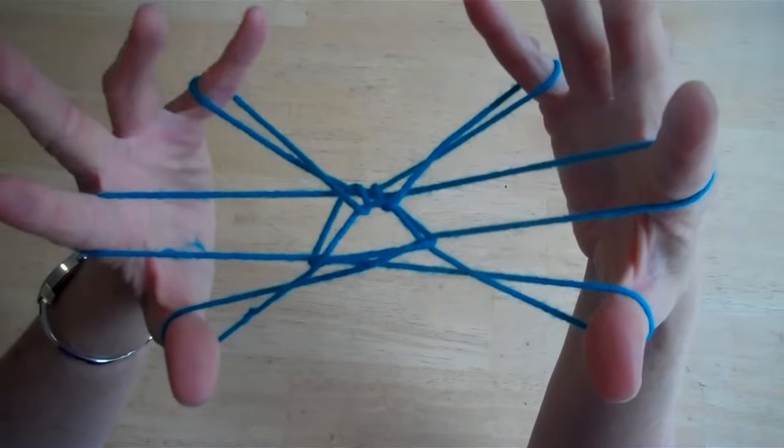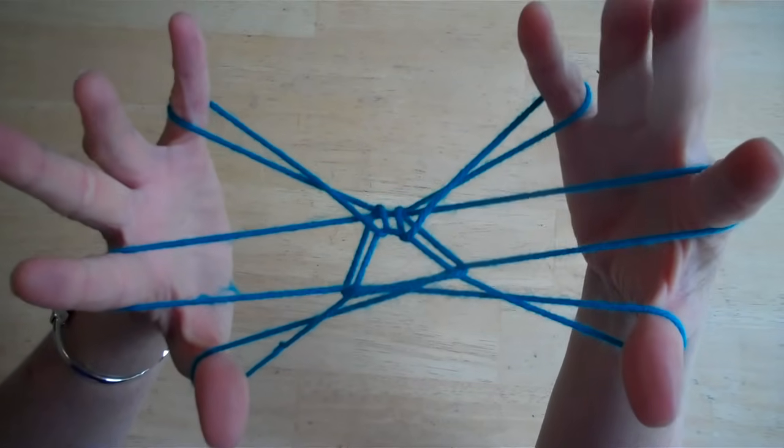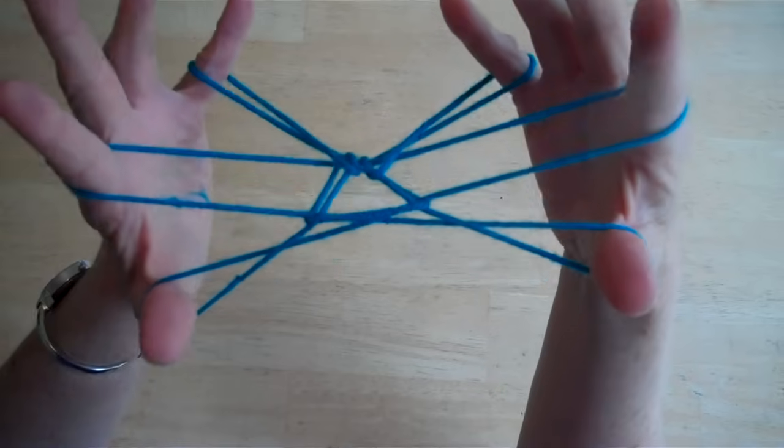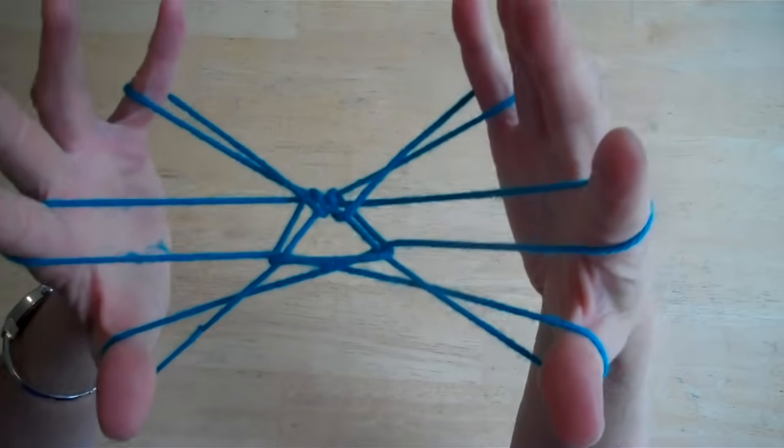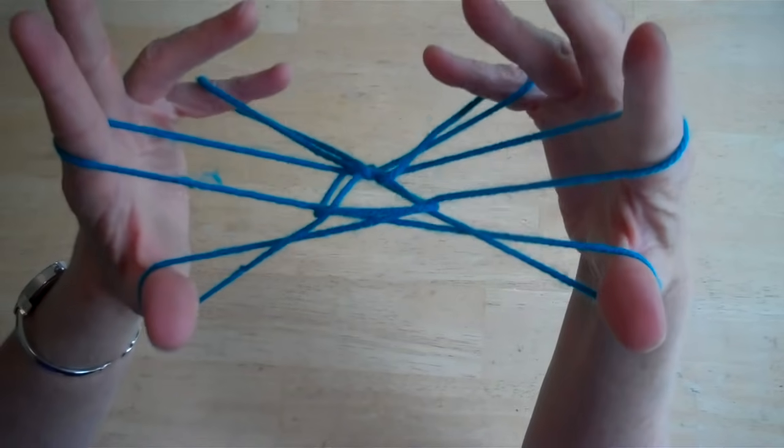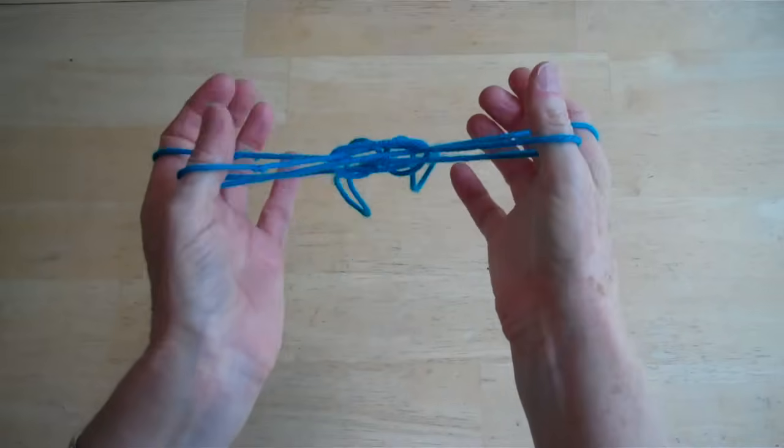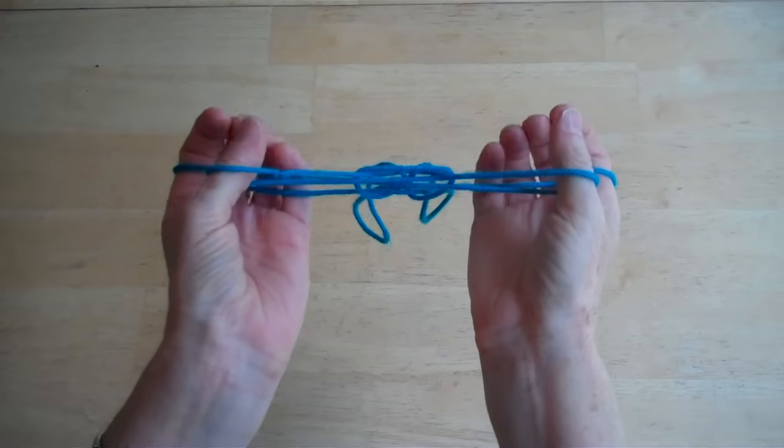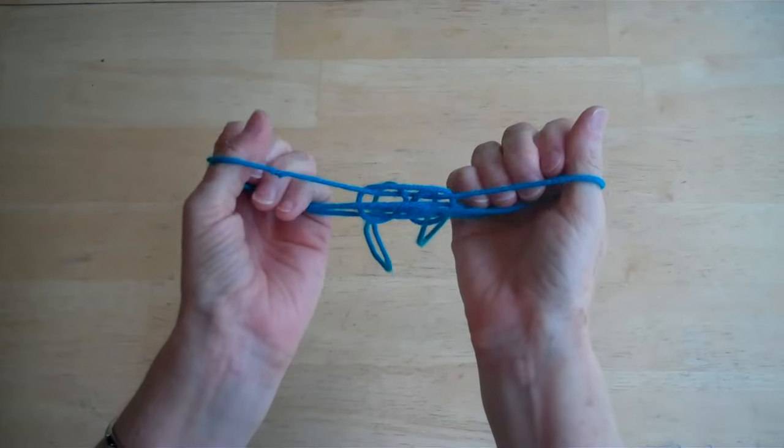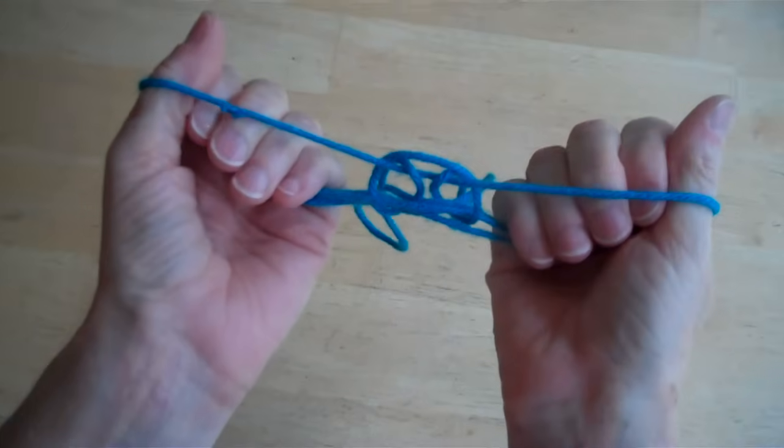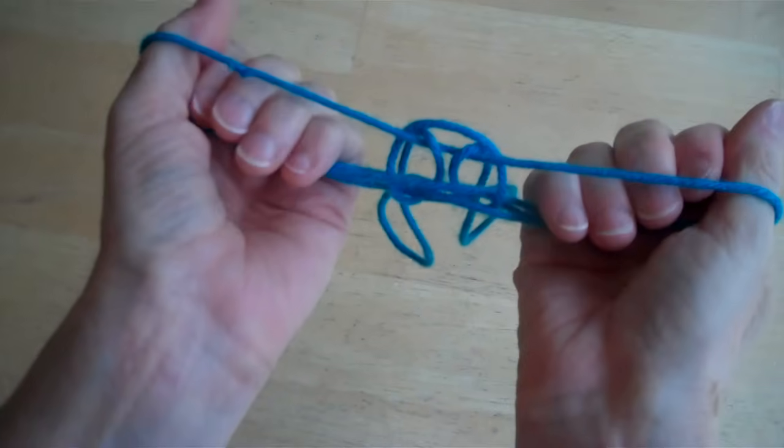Now at this point the strings that are on your pinkies are going to become the rabbit's ears. You are going to drop your pinkies but do not pull. Just keep it very loose. Turn your hands this way. Then you're going to sort of close everything up and you're going to take all of these other fingers. You're going to put them in this loop where your thumb is. They're going to go right in here.